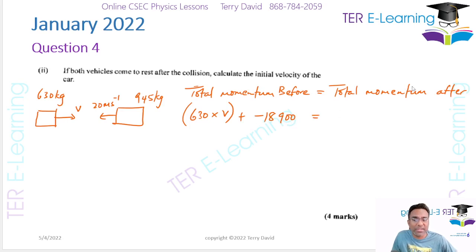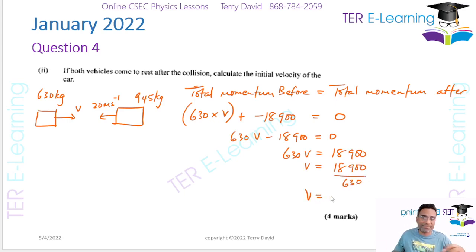This equals the total momentum after. They said both vehicles came to rest after the collision. So if both vehicles are at rest, the total momentum after the collision is zero. So 630 V minus 18,900 equals zero. Therefore 630 V equals 18,900. My velocity is 18,900 divided by 630, which is 30 meters per second.